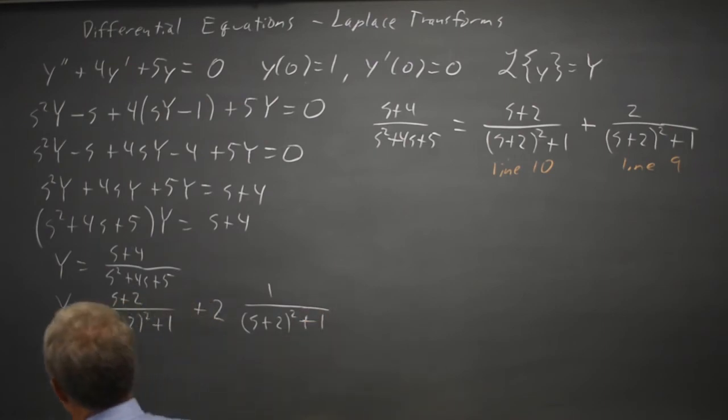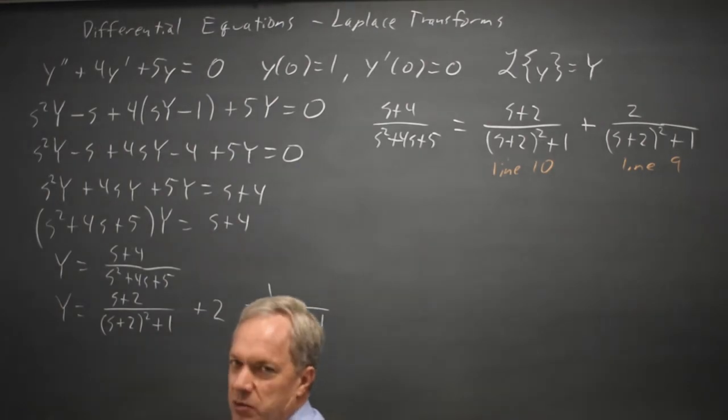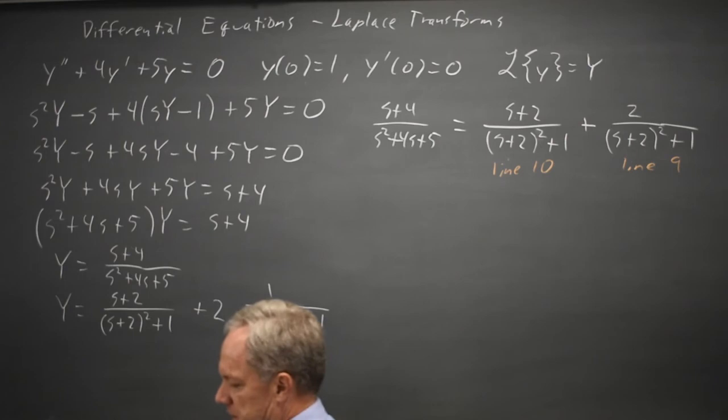Since the actual form is b over s minus a squared plus b squared and the b squared in the denominator is one, I made my numerator one, which is more important when the b is not one to avoid careless errors.